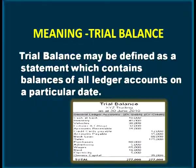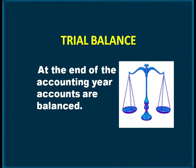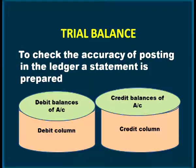Why we are making the balance of different ledger accounts? Because the next procedure is preparation of the trial balance. Trial balance may be defined as a statement which contains balances of all ledger accounts on a particular date. At the end of the accounting year, different accounts are balanced, and to check the accuracy of posting in the ledger, a statement is prepared — that statement is known as trial balance.